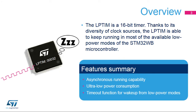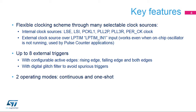The low-power timer peripheral embedded in the STM32WB microcontroller provides a 16-bit timer that is able to run even in low-power modes. This is made possible thanks to a flexible clocking scheme. One major function of the low-power timer is its capability to keep running even when no internal clock source is active when configured in asynchronous counting mode. Its main feature is its ability to keep running in low-power mode when almost all clock sources are turned off.